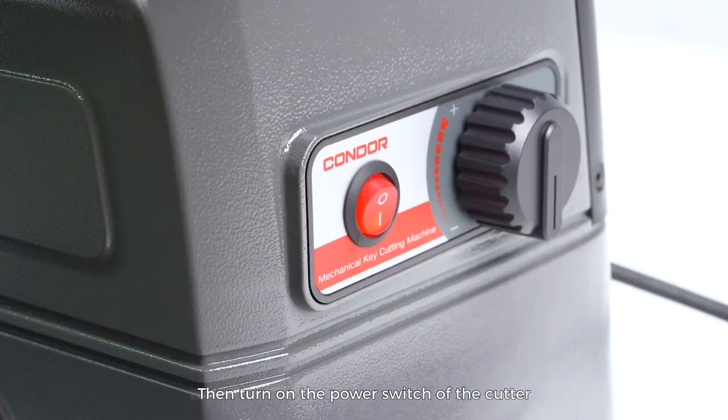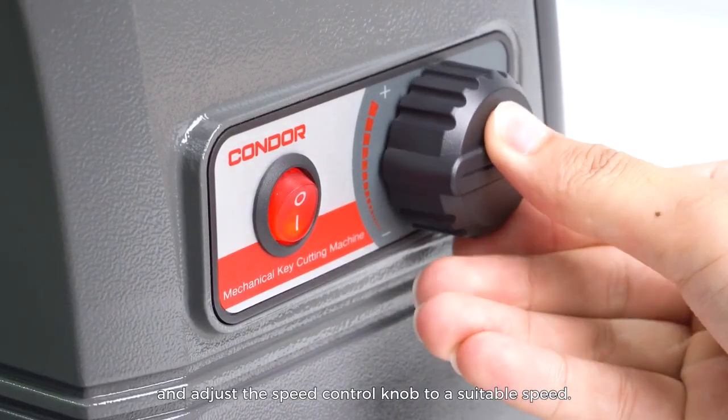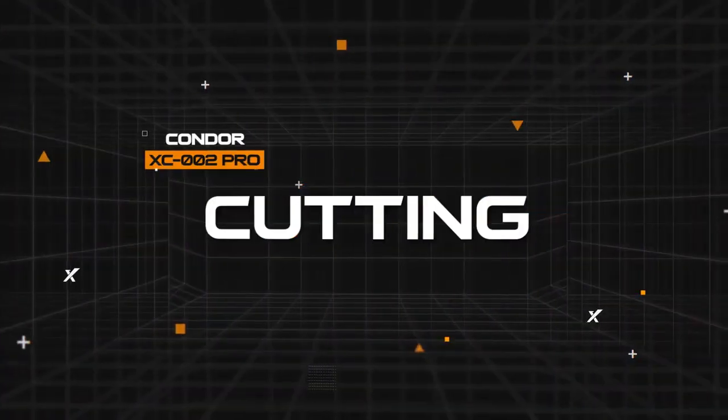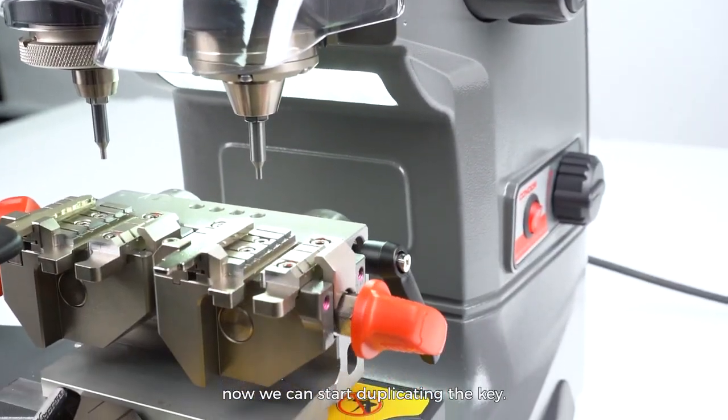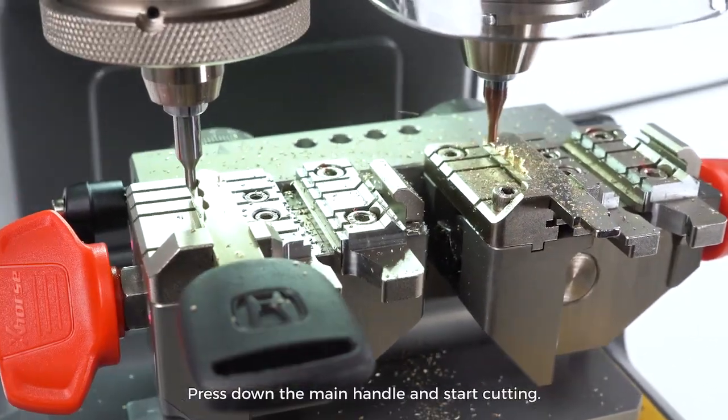Then turn on the power switch of the cutter and adjust the speed control knob to a suitable speed. Cutting. After getting everything ready, now we can start duplicating the key. Press down the main handle and start cutting.